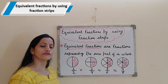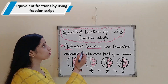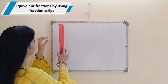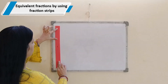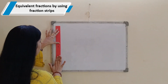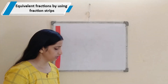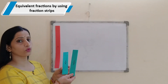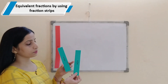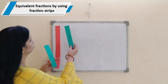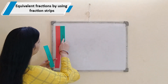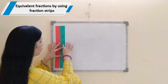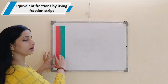So today I will use some fraction strips to clarify the concept of equivalent fractions. These are the fraction strips. This is a whole — this strip is representing a whole. Now this whole has been divided into 2 equal parts, and each strip is representing 1 by 2. That means 2 halves are making a whole here.